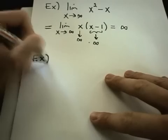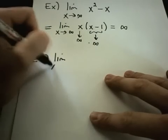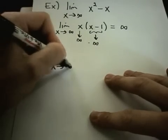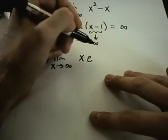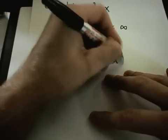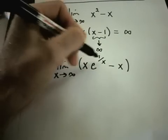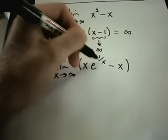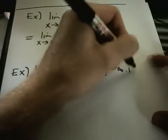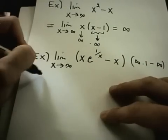Let's do another one, maybe one that's not so easy. Suppose we have the limit as x goes to infinity of x times e to the 1 over x, minus x. In this case, certainly the x's are going to infinity. The 1 over x is going to 0 as x goes to infinity, so really this is like having infinity times 1 minus infinity — again the indeterminate form infinity minus infinity.